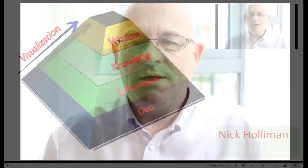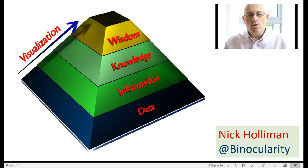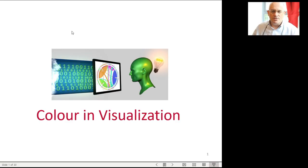Welcome to this episode on data visualization, part of a series of short films supporting courses I teach in data science and artificial intelligence. You can find more by following me on LinkedIn or as Binocularity on Twitter. This is an episode on color in more detail, so we're going to look at how color is created and used in visualizations. You can choose to spell color Americanly or in the English way, or visualization Americanly or in the English way, as you wish.